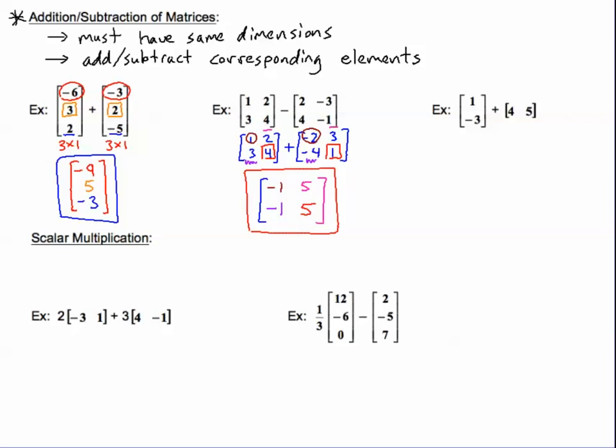Looking at this third example in this section, I'm trying to add a two by one to a one by two. Clearly, they do not look like each other. They are not the same dimensions, so this cannot be done. The directions most likely will tell you to write not possible and explain why it is not possible. So I might say not possible and then incorrect dimensions. Seems like an easy way to explain my not possible.